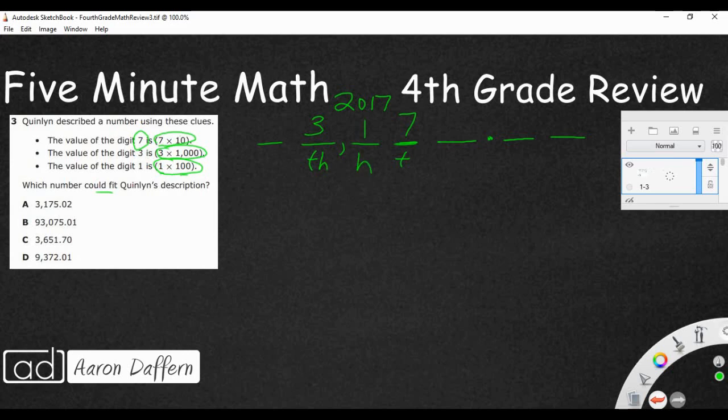So let's line up our numbers underneath it. A is going to be 3,175 and 2 hundredths. That looks like it can work. Let's just be super safe and check the other ones. The next one is 93,075 and 1 hundredths. And you see here's our problem right there. It doesn't have a 1 in the hundreds place. So we'll get rid of that.